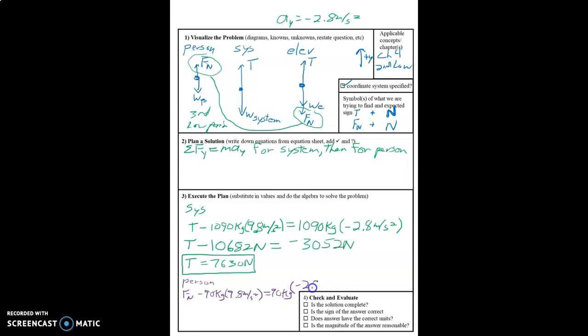equals 90 kilograms, times negative 2.8 meters per second squared. And so then we're going to find 90 times 9.8, 882.